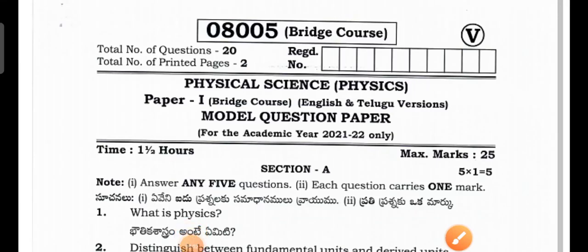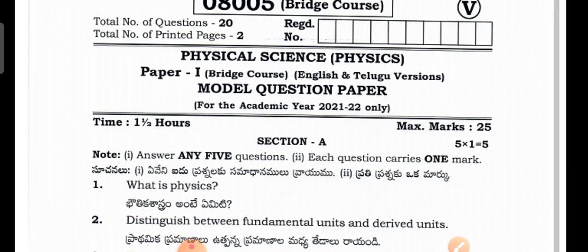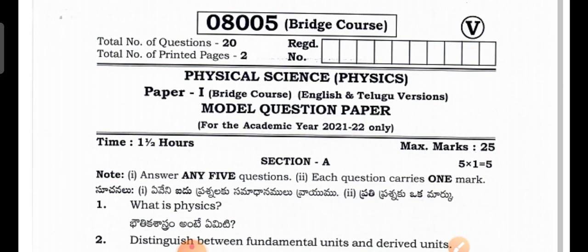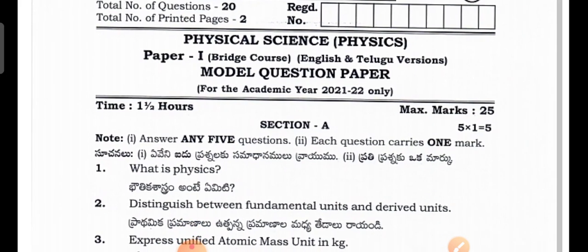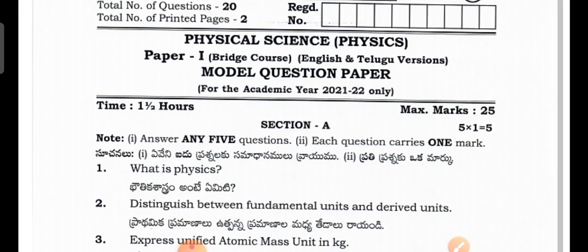Good morning, welcome back to my channel. In this video I would like to discuss about the latest model question paper for the bridge course first year students in physical sciences. In physical sciences there are two papers: the first one is physics and the second one is chemistry. In physical sciences, the question paper covers physics as well as chemistry.